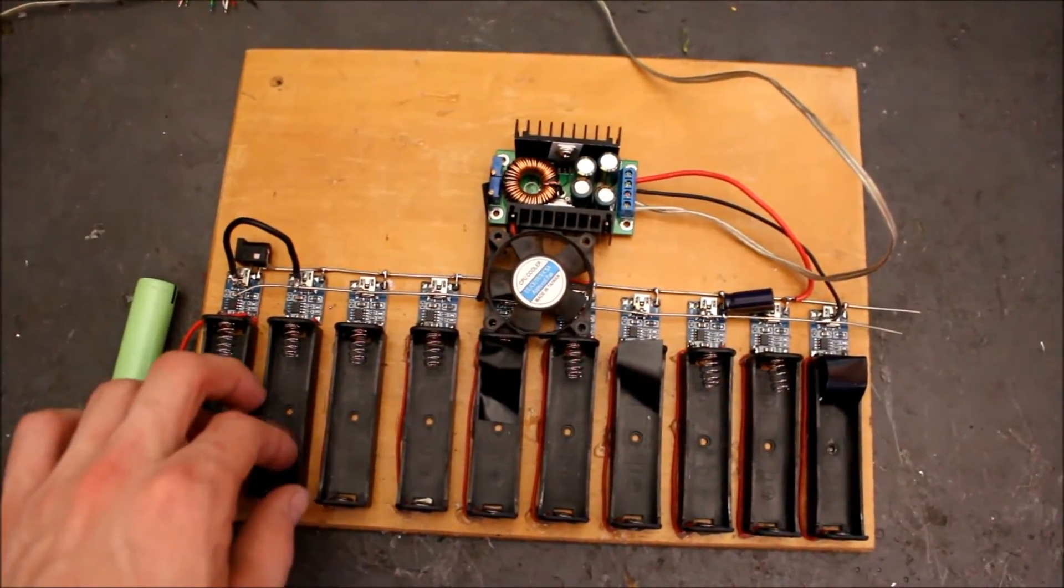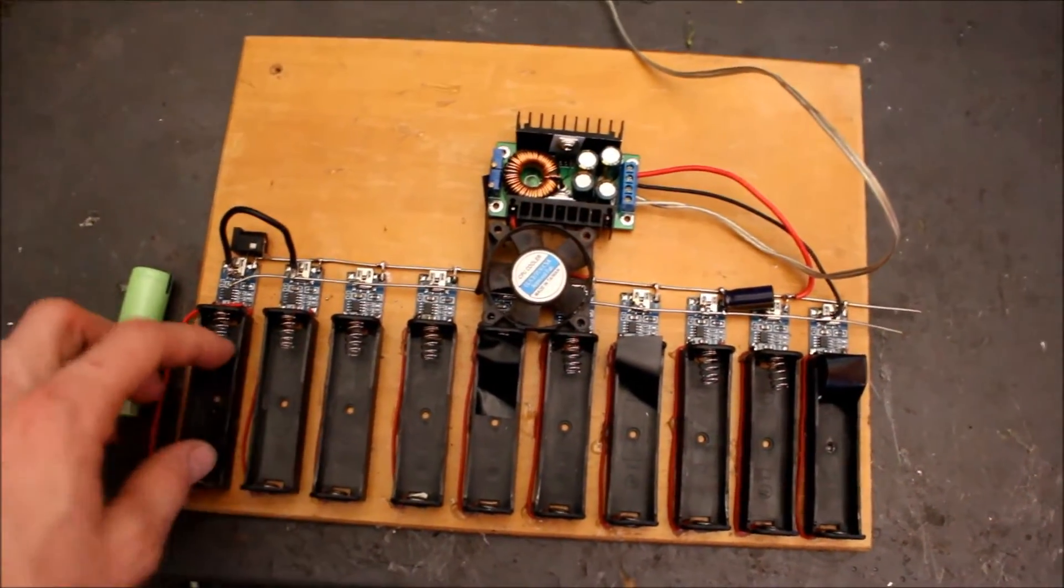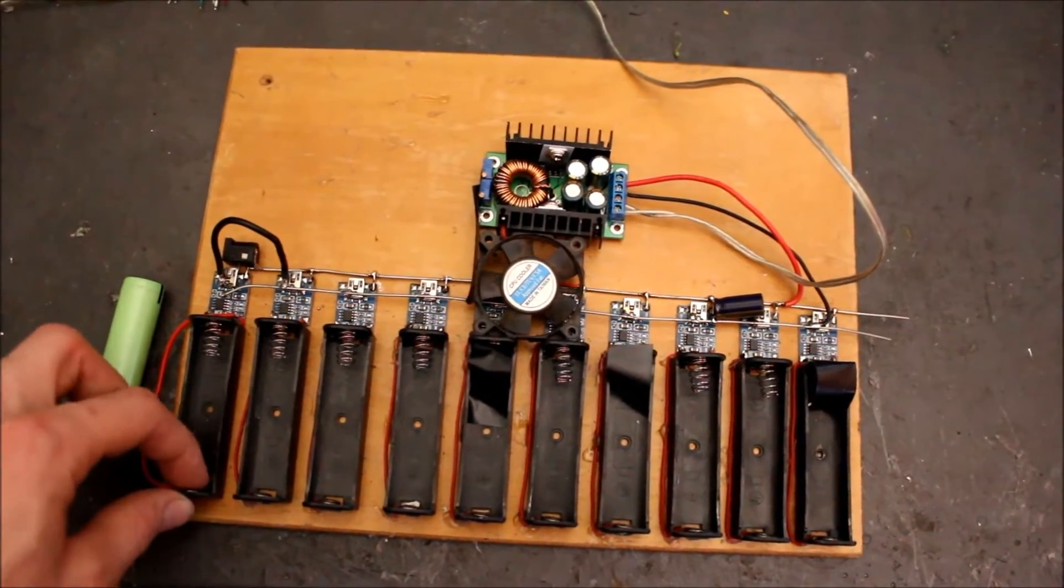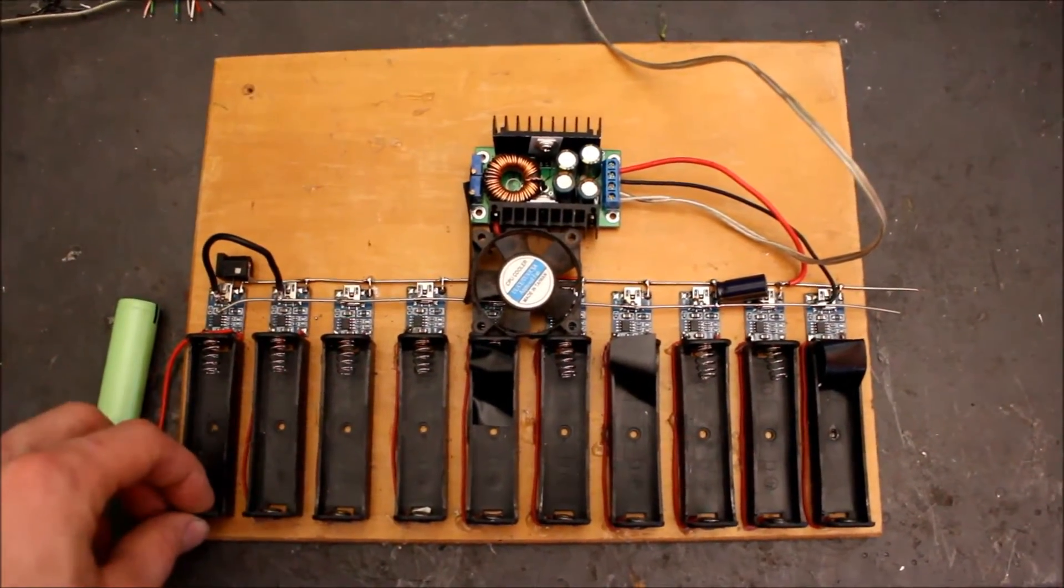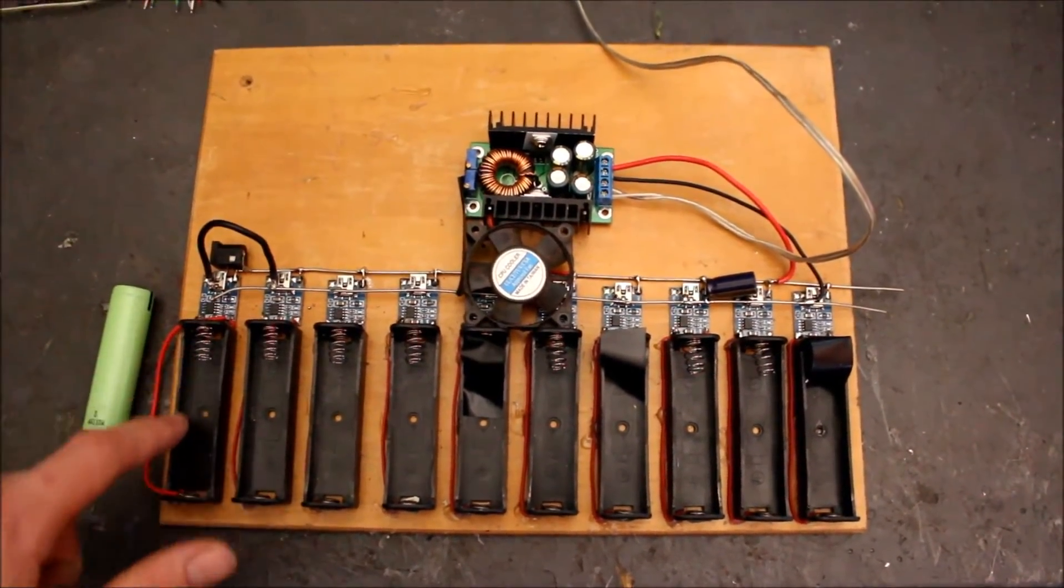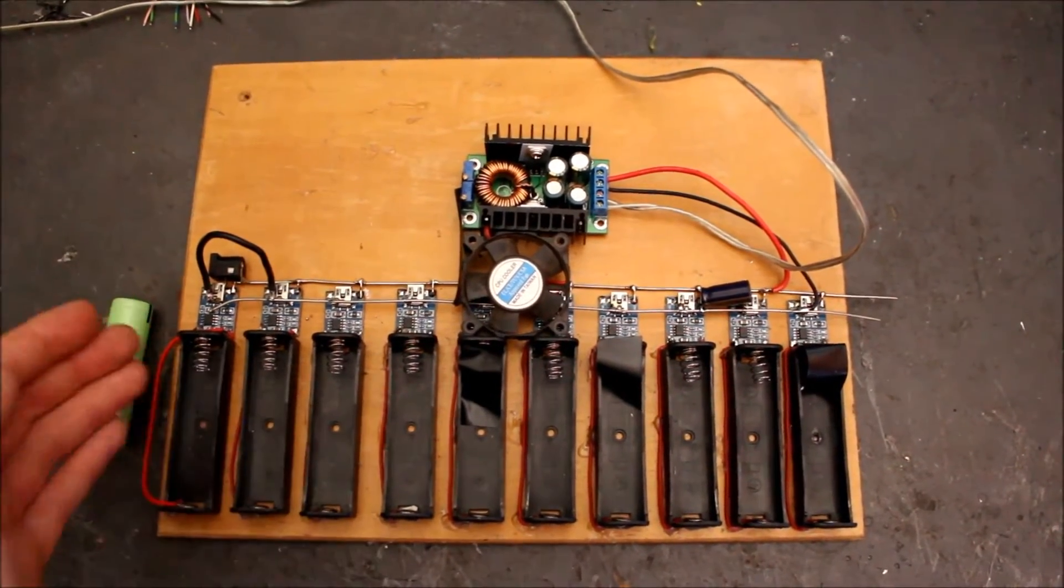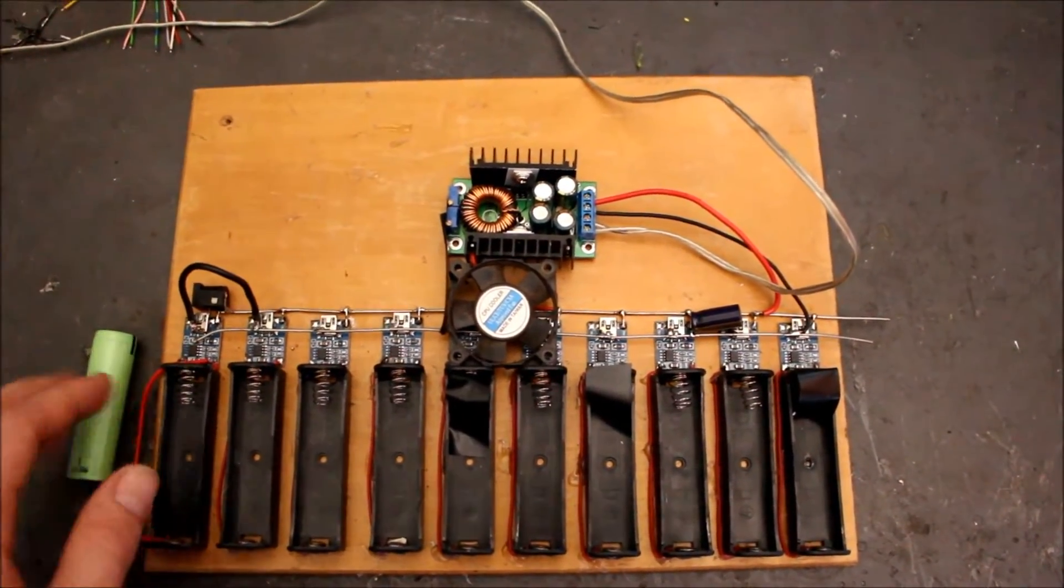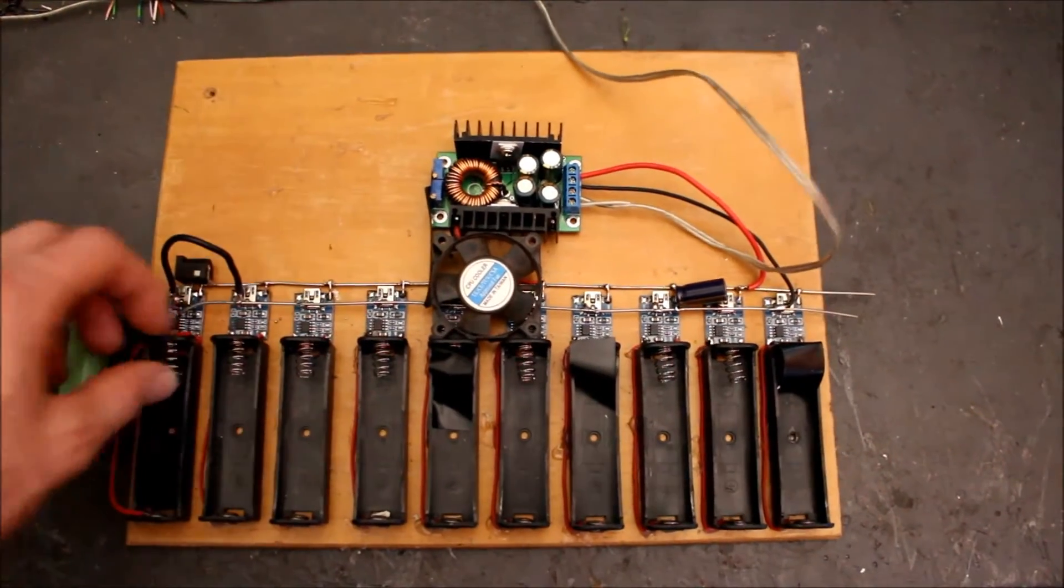I ended up getting these holders with a spring on one end and a metal brass tube on the other. I actually cut the edges off that sort of curl around the top of the cells, makes it a lot easier to get them in and out.